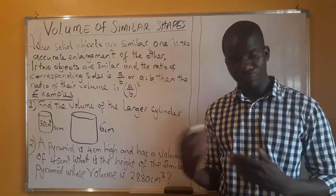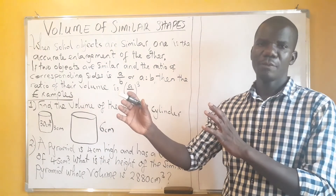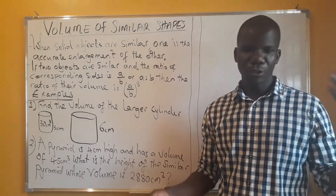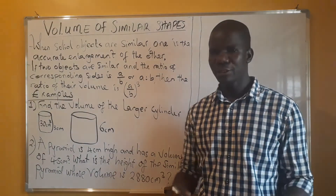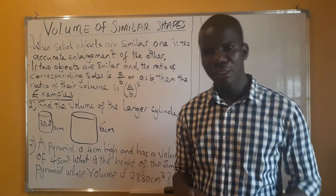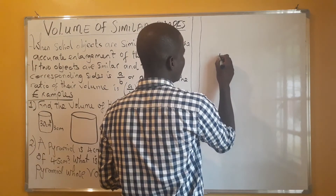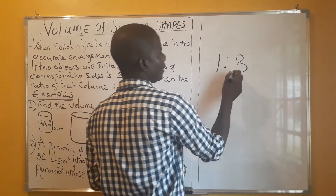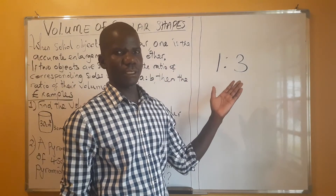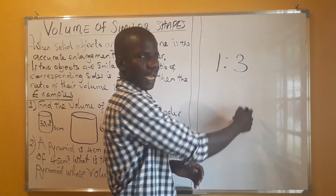The units of volume are cubed, so the ratio has to be in that mode. We can't be dealing with units in different modes — like adding kilometers plus meters, it doesn't work. So if the ratio of similar objects is 1 to 3, then for area we squared it, giving 1 to 9.